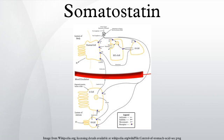Brain: Somatostatin is produced by neuroendocrine neurons of the ventromedial nucleus of the hypothalamus. These neurons project to the median eminence, where somatostatin is released from neurosecretory nerve endings into the hypothalamo-hypophysial system through neuron axons. Somatostatin is then carried to the anterior pituitary gland, where it inhibits the secretion of growth hormone from somatotrope cells.